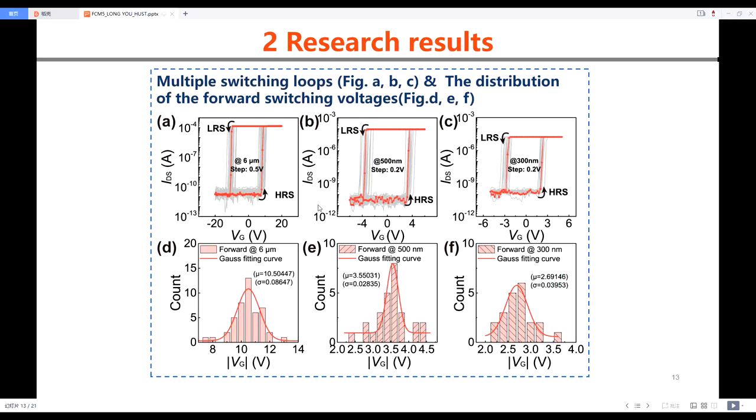In order to confirm the stability of the operating voltage of our device, we have carried out the test of switching loops and conducted the statistical analysis. Specifically, the forward switching voltages are extracted from the loops and we record the counts of different voltages. We find that the distribution of the forward switching voltages follows a Gaussian distribution, and these results confirm the stability of operating voltage.